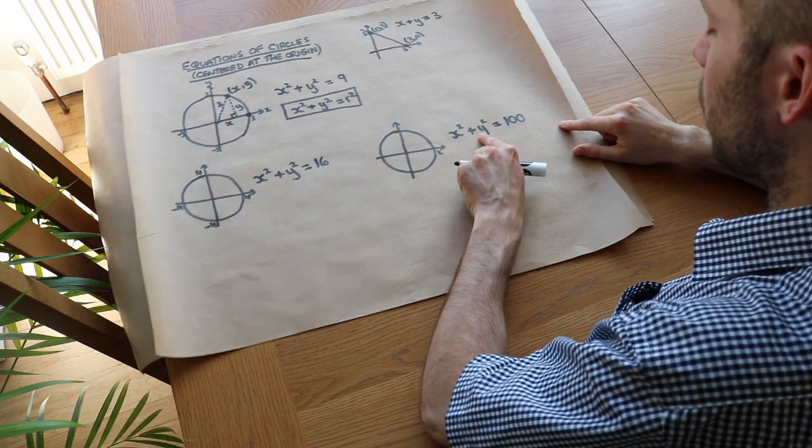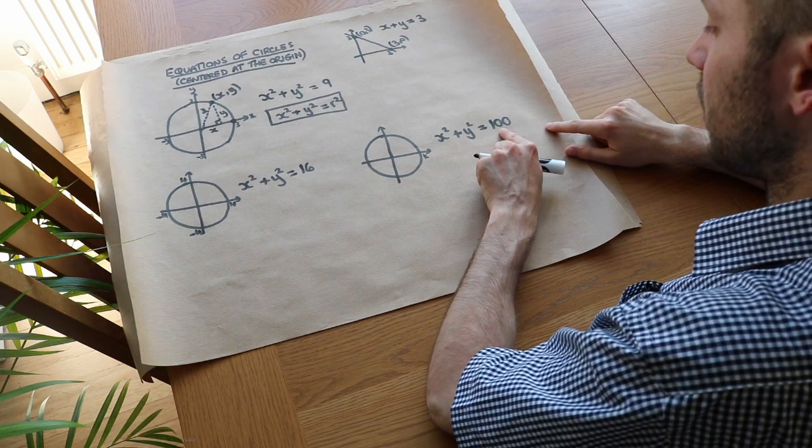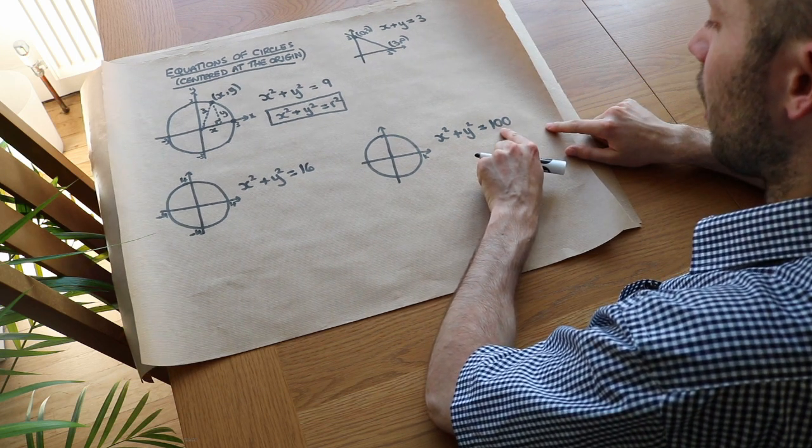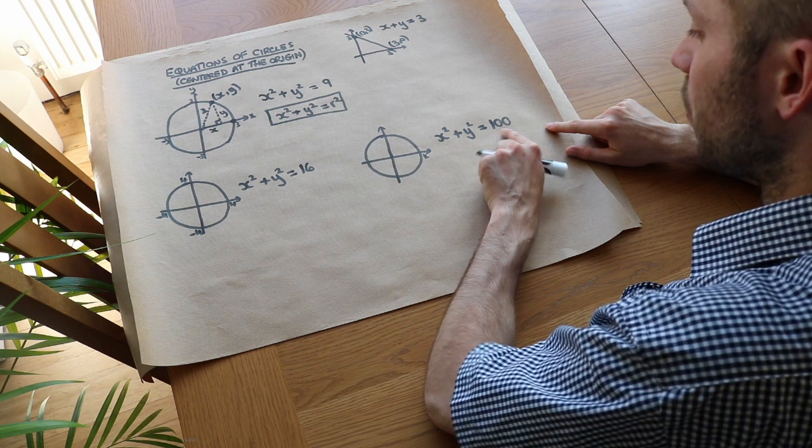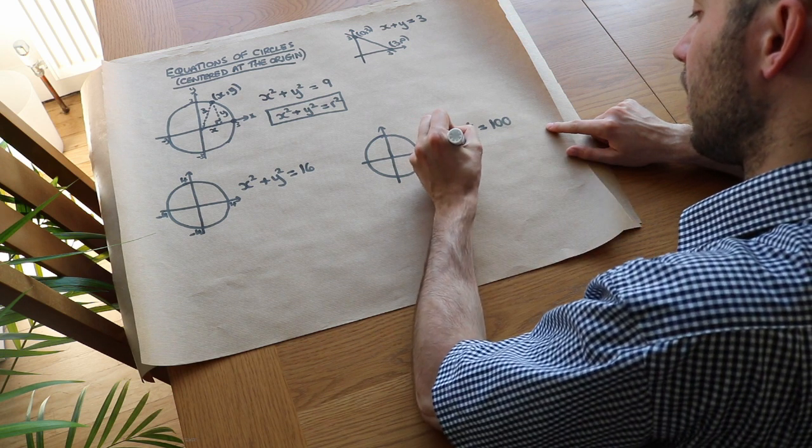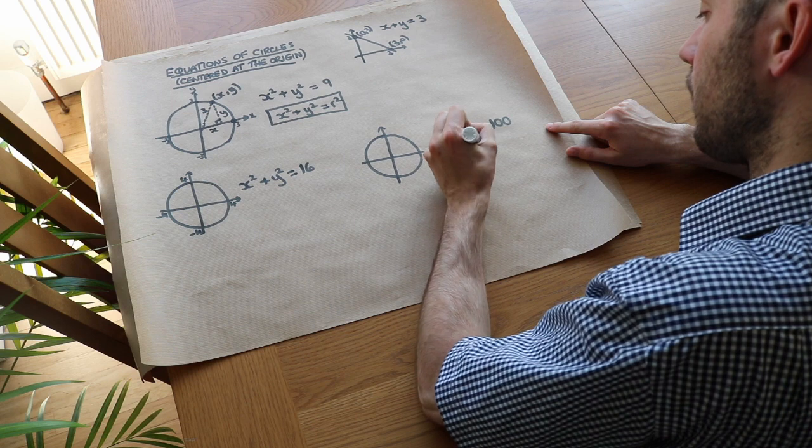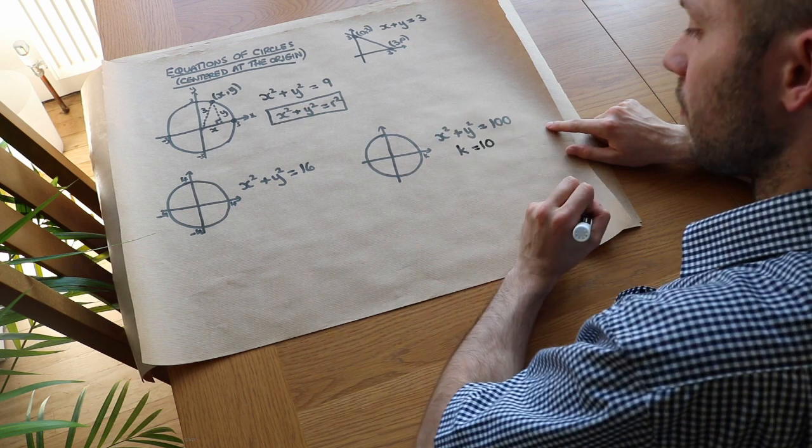Well, x squared plus y squared equals r squared. In this case, r squared is 100. So what squared is 100? Well, it's 10. So that means that k must be equal to 10.